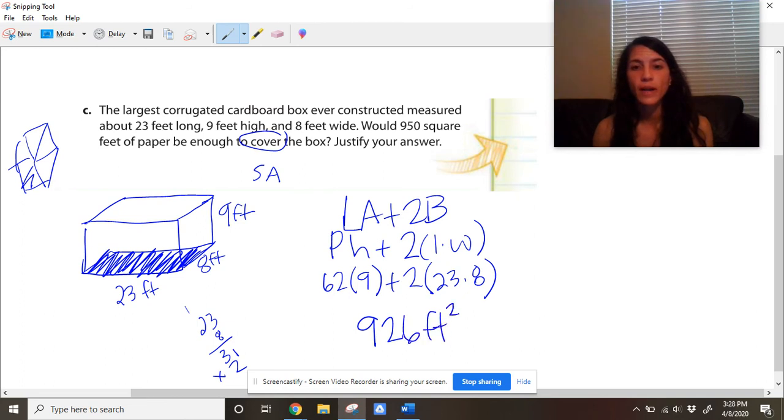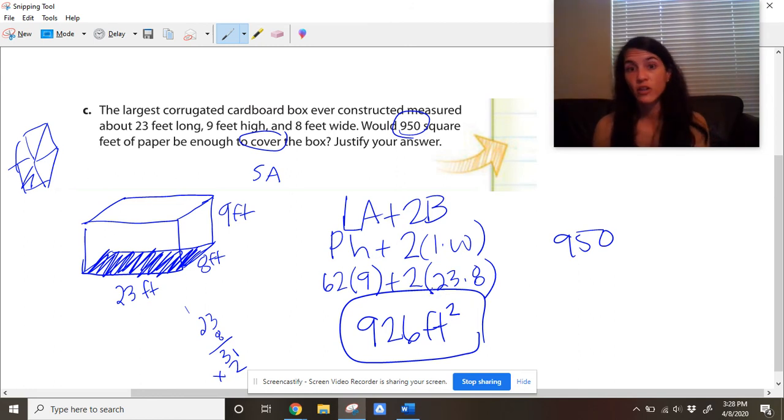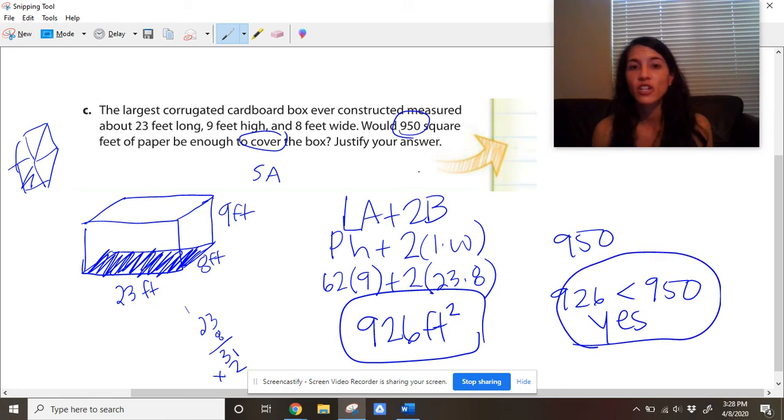62 times 9, 2 times 23 times 8. So the total surface area of this corrugated cardboard box, 926 feet squared. So that is the total surface area. Now the question is asking us, if we have 950, would that be enough to cover the box? And what do you think? The box surface area is 926, but we have 950. So 926 is less than 950. So the answer is yes, we do have enough. And where it says justify this, that is your justification because we've shown that the amount that we need is less than what we have. And so that's how you justify it.